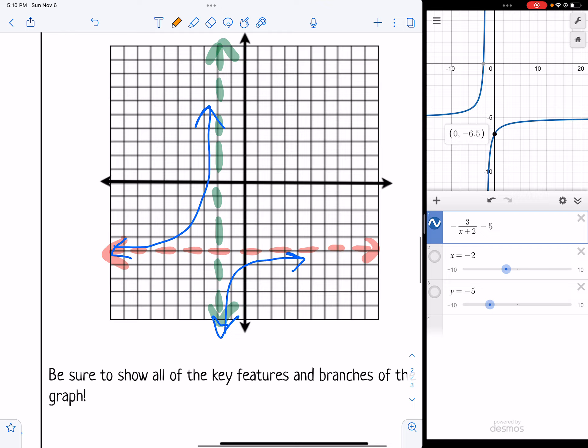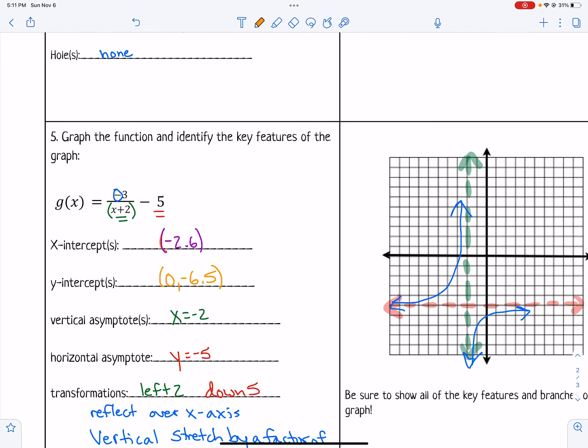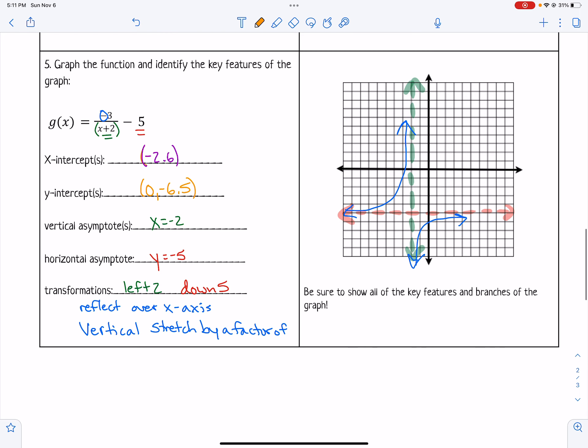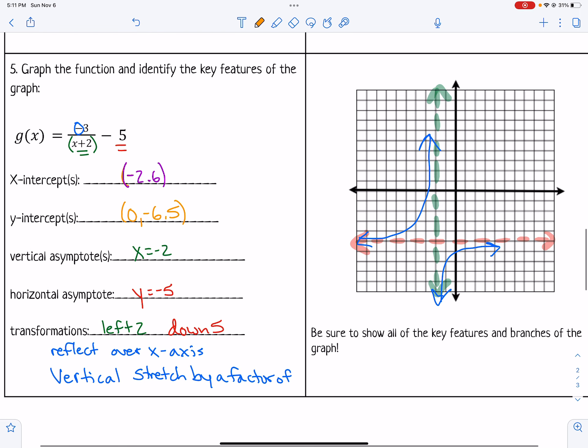So that would be it for number 5. So there's my graph. No holes were found in the graph because we didn't have any information that would indicate that we would have something cancel out. So that's it for practice quiz number 12.